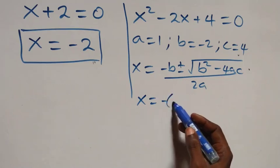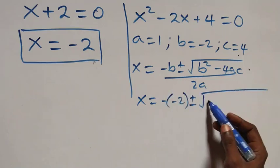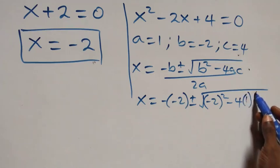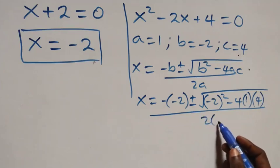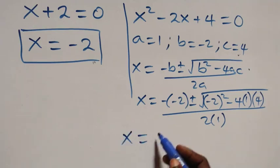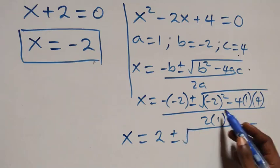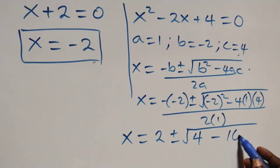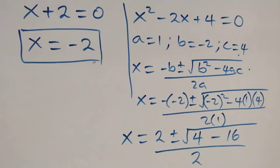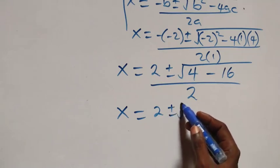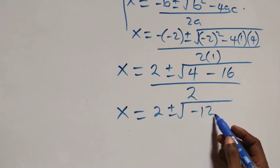This becomes x equals minus(minus 2) plus or minus square root of (minus 2)² minus 4 times 1 times 4, over 2 times 1. That gives x equals 2 plus or minus square root of 4 minus 16, which is square root of minus 12, over 2.